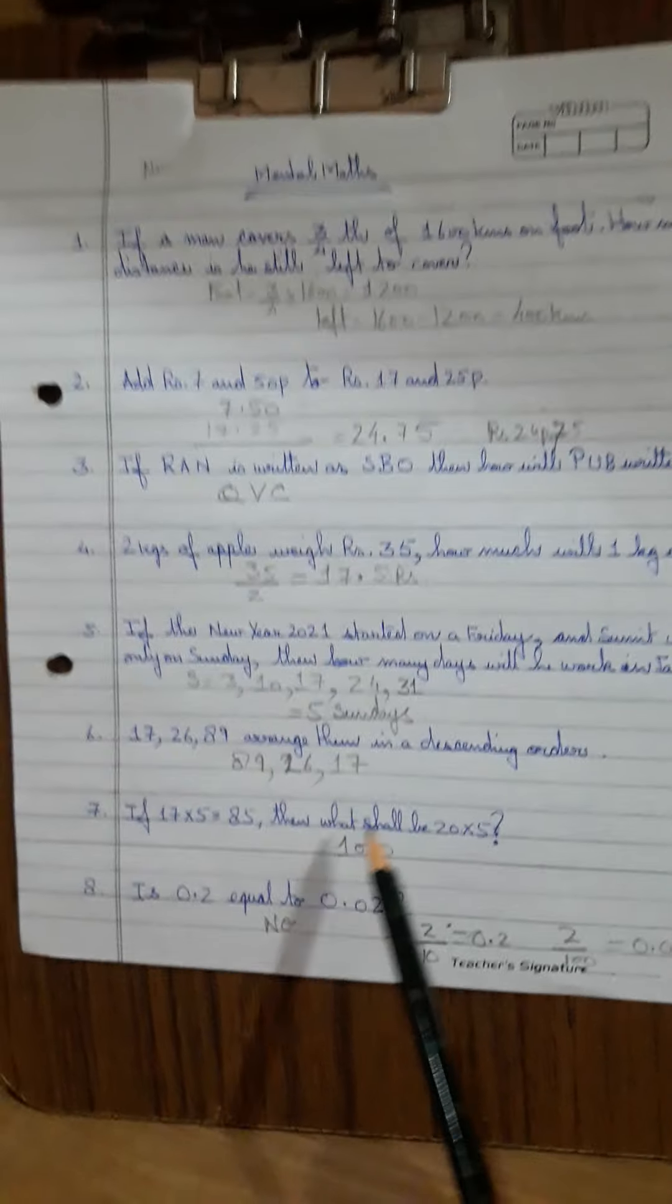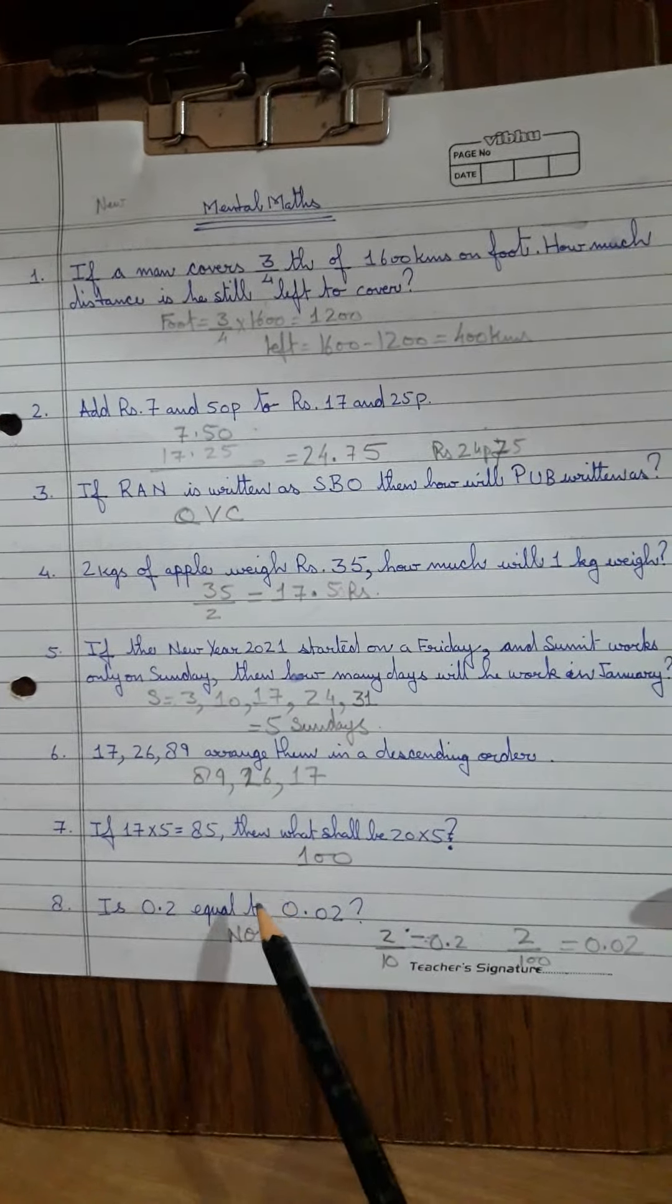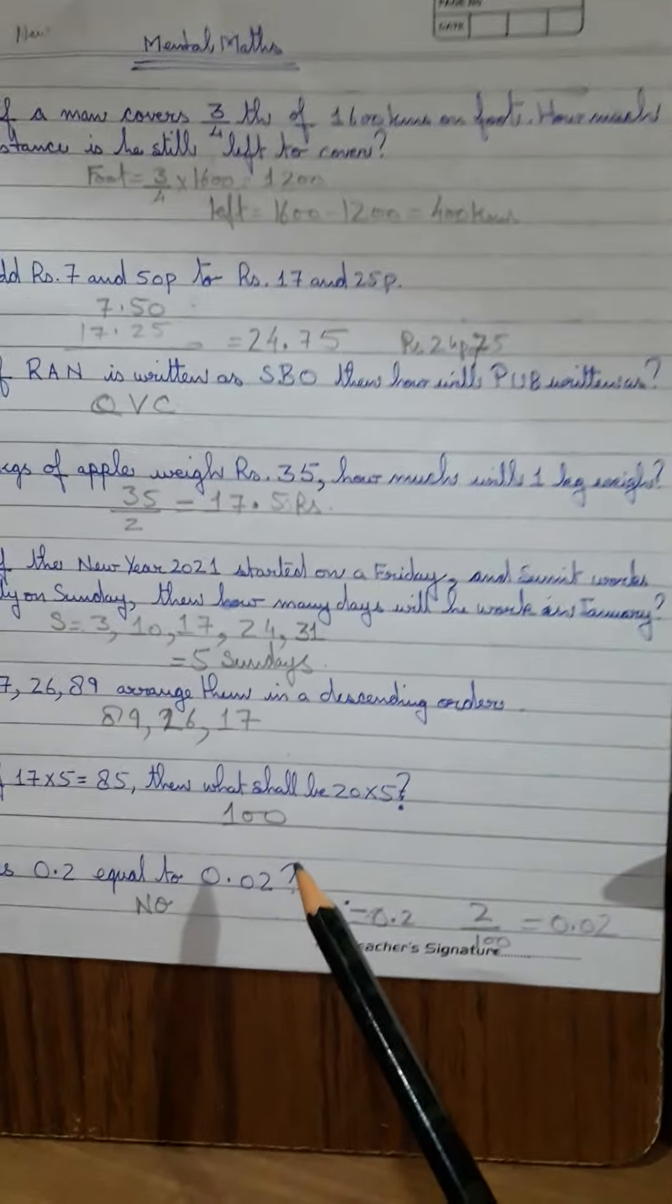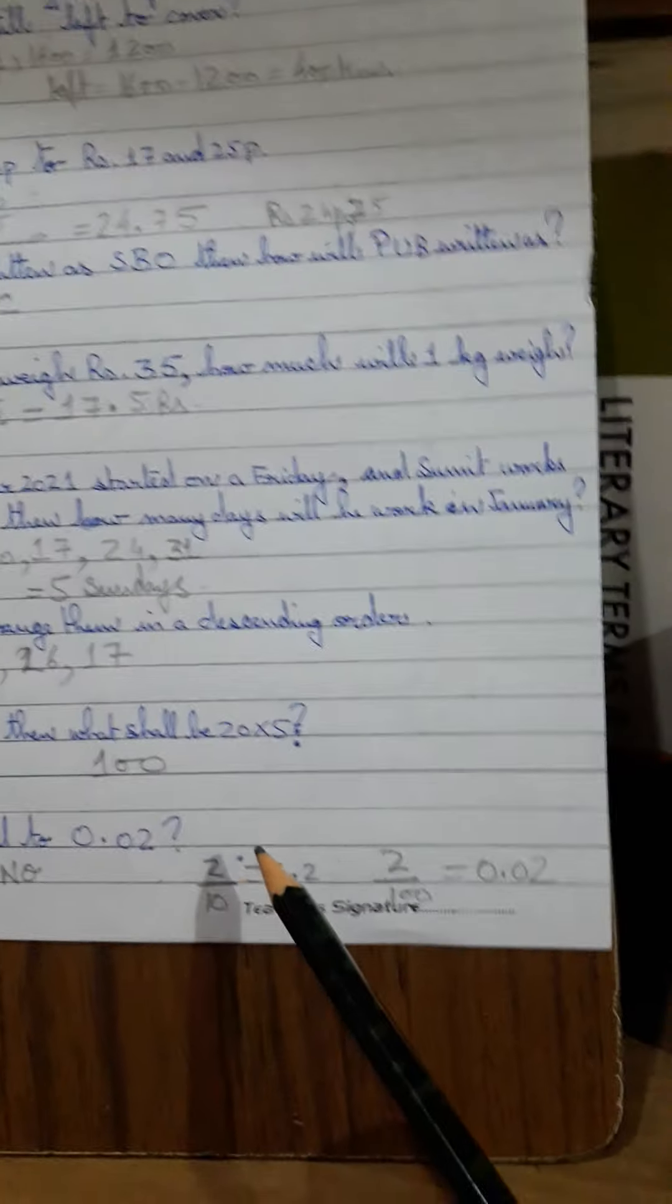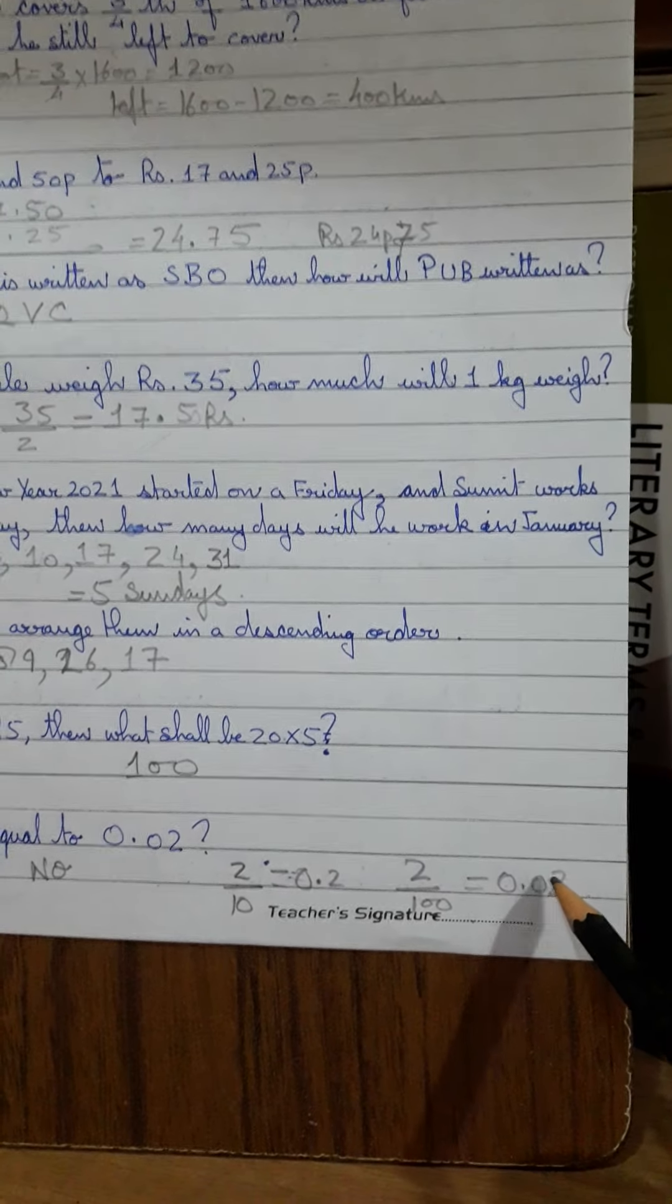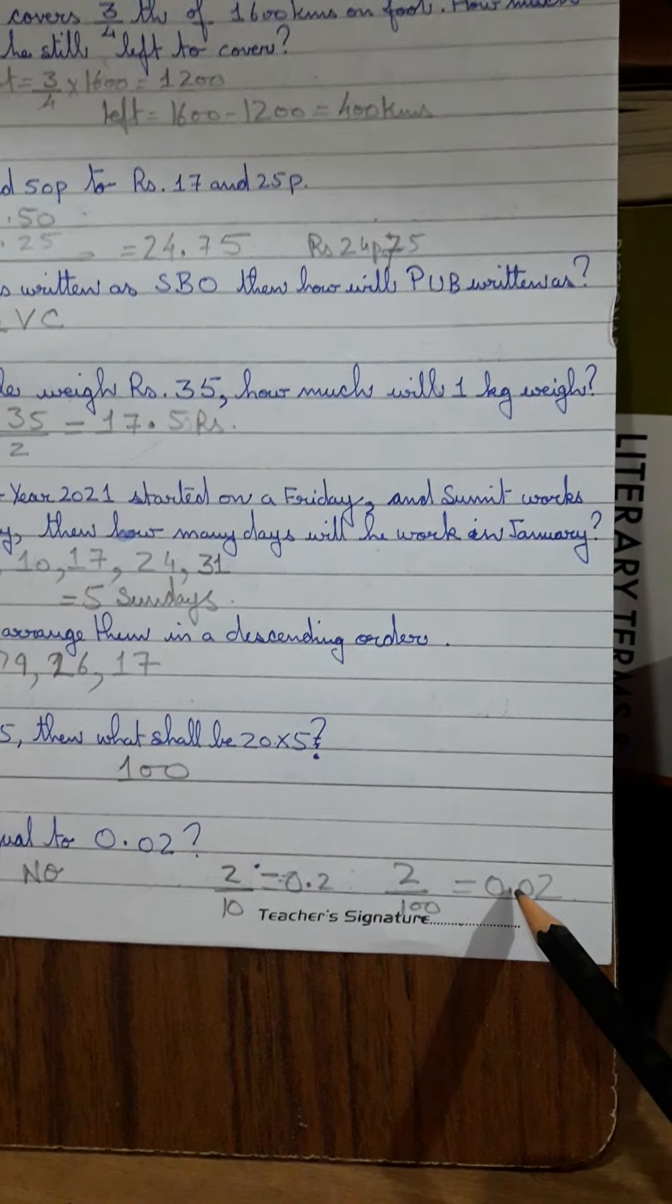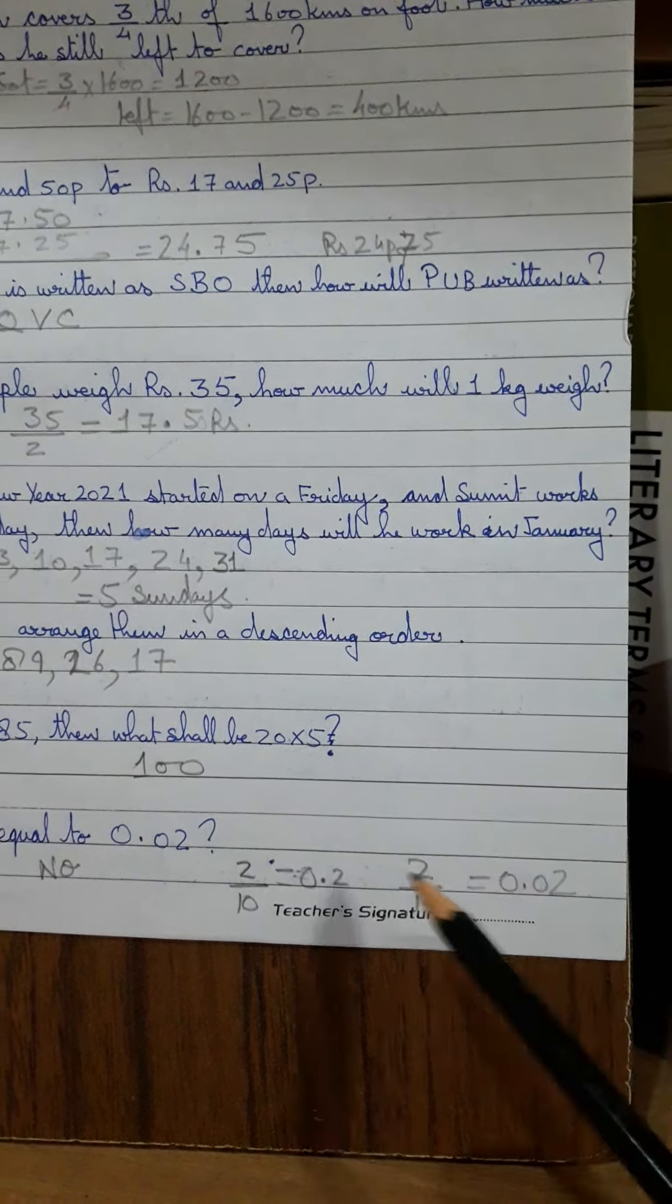This was again a no brainer, you just had to multiply 20 into 500. 0.2 equal to 0.02. I told you in decimals, I have been telling this at least to class 5, that 2 over 10 is 0.2 and 2 over 100 is 0.02. They are not equal. After a decimal, if you put a 0, it changes the value of the equation, of the fraction.